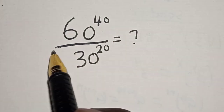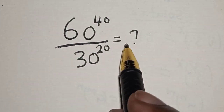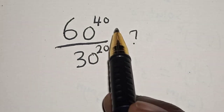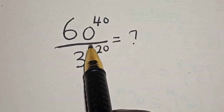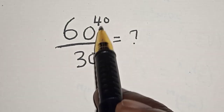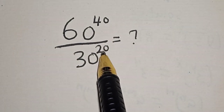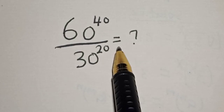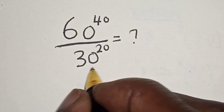60 raised to power 40 divided by 30 raised to power 20 is equal to what? Hi everyone, welcome to my class. In this class we quickly want to evaluate this math problem: 60 raised to power 40 divided by 30 raised to power 20. Before we proceed, please don't forget to like, share, comment and subscribe. Thank you.